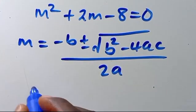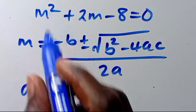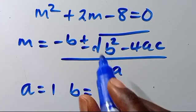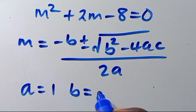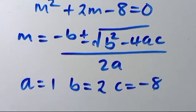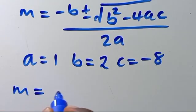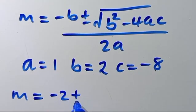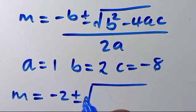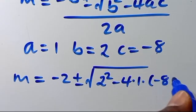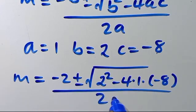Where parameter A, the coefficient of M squared, equals 1; parameter B, the coefficient of M, equals 2; and parameter C equals negative 8. Substituting everything: M equals negative 2, plus or minus the square root of 2 squared minus 4 times 1 times negative 8, over 2 times 1.